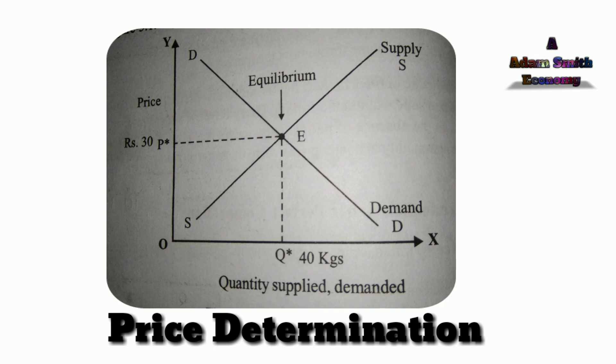In the figure, the demand and supply of a commodity are shown on the OX axis and the price of the commodity on the OY axis. DD is the demand curve and SS is the supply curve. As per the diagram, the equilibrium price is found at the point where both the demand and supply curves intersect each other at point E. That is, O.P. is the equilibrium price and O.Q. is the equilibrium supply and demand quantity.